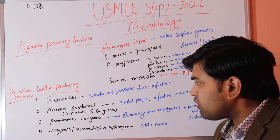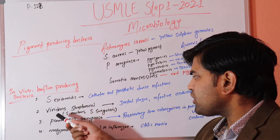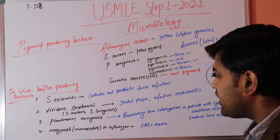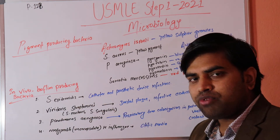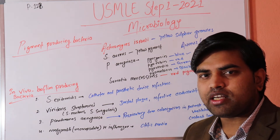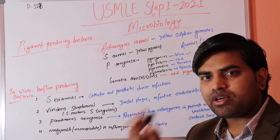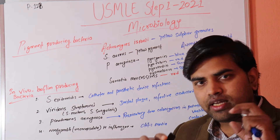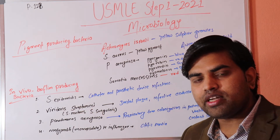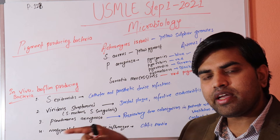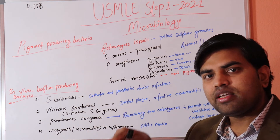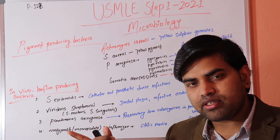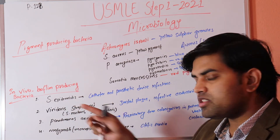Biofilm-producing bacteria include: Staphylococcus epidermidis, viridans streptococci (Streptococcus mutans and sanguineus), Pseudomonas aeruginosa, and non-typeable Haemophilus influenzae. Staphylococcus epidermidis is coagulase-negative, contrasting with Staph aureus (coagulase-positive). Staph saprophyticus causes UTIs in sexually active females, while Staph epidermidis is normal skin flora.